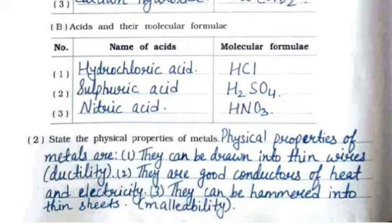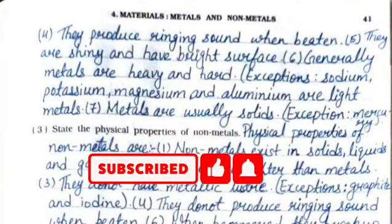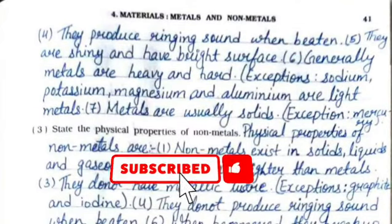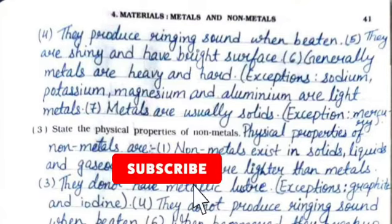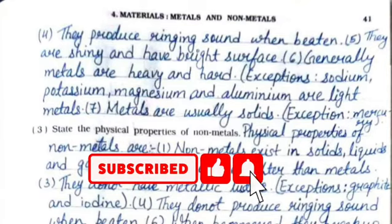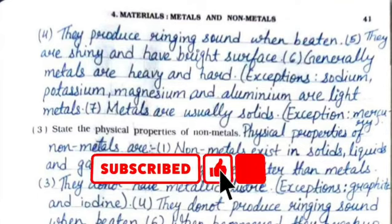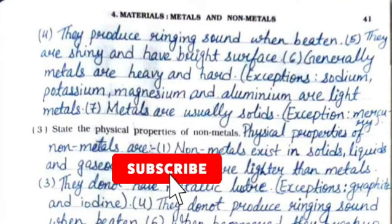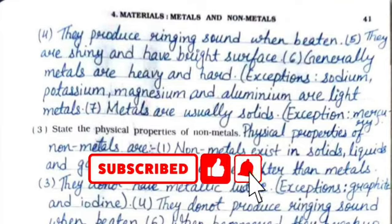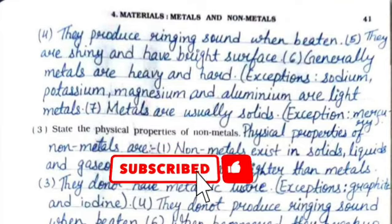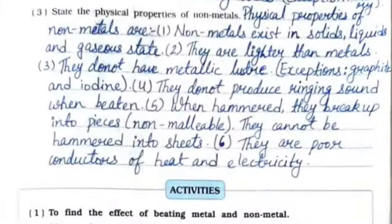Second: state the physical properties of metals. First: they can be drawn into thin wires — ductility. Second: they are good conductors of heat and electricity. Third: they can be hammered into thin sheets — malleability. Fourth: they produce a ringing sound when beaten. Fifth: they are shiny with a bright surface. Sixth: generally metals are heavy and hard — exceptions include sodium, potassium, magnesium, and aluminum which are light. Seventh: metals are usually solids — exception is mercury, a liquid metal.